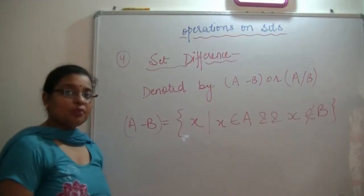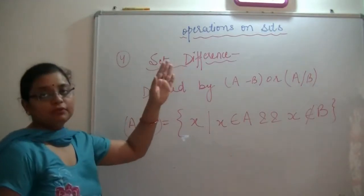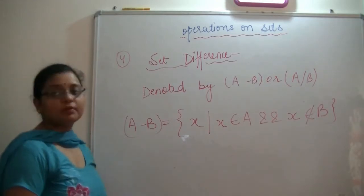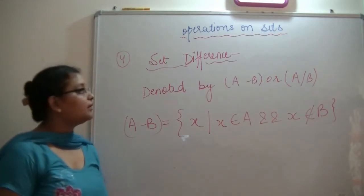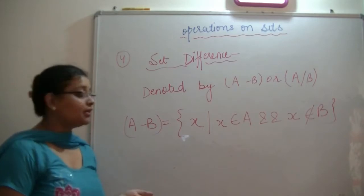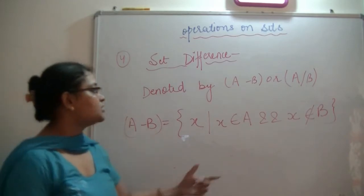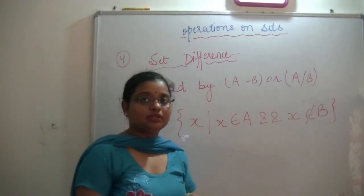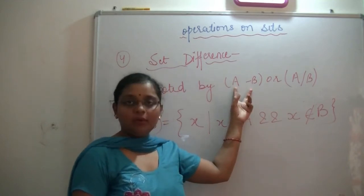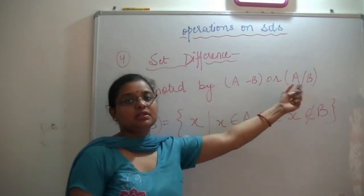Now we are looking at the next operation, that is set difference — the difference of two sets. This can be denoted where two sets are A and B. So A-B can be written in different ways.